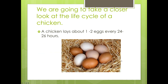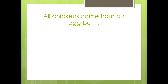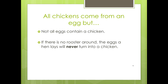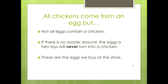We are going to take a closer look at the life cycle of a chicken. A chicken lays about one to two eggs every 24 to 26 hours. All chickens come from an egg, but not all eggs contain a chicken. If there is no rooster around, the eggs a hen lays will never turn into a chicken — and these are the eggs that we buy at the store or collect from the chicken coop.